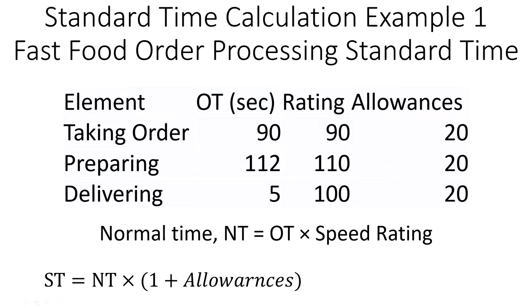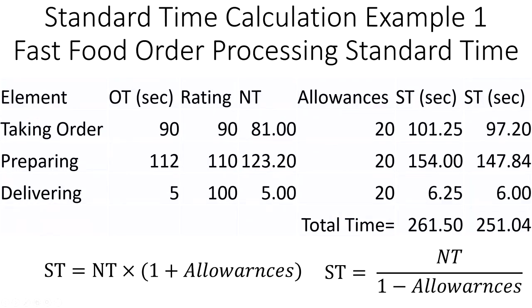There are two formulas for standard time: either this one, or ST equals normal time divided by 1 minus allowances, which is more preferred. Here are the calculations I have done already, so you can check your numbers.